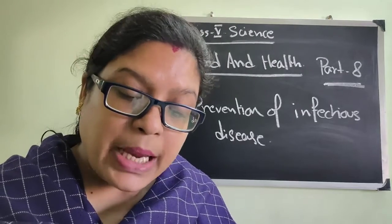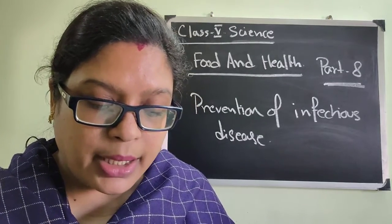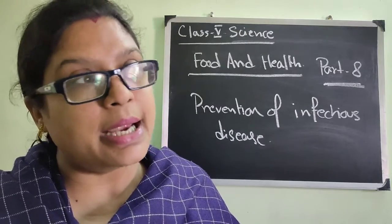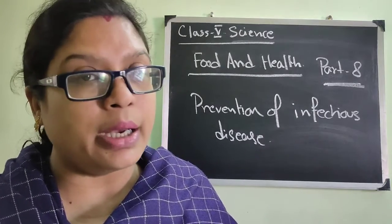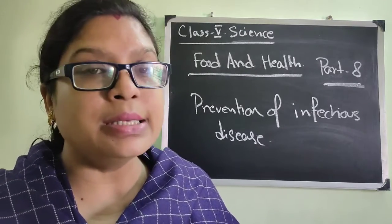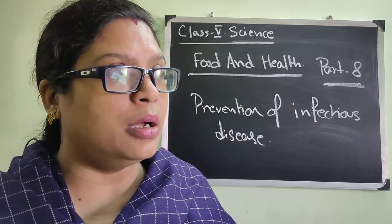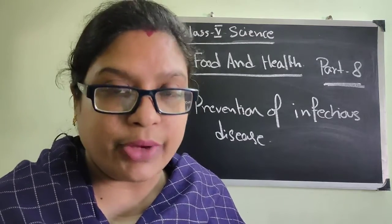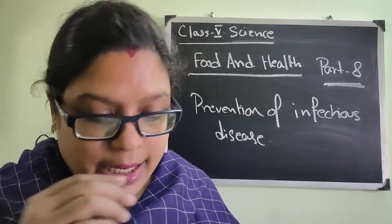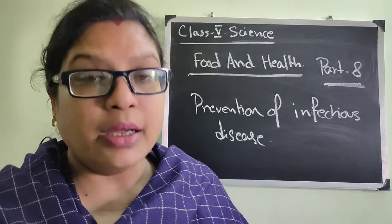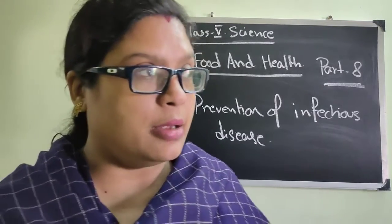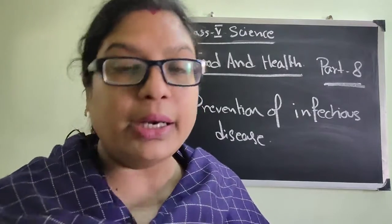Spray insecticides, which are chemicals that kill insects. Spraying insecticides is also important. In big crop fields, insecticides and pesticides are spread to kill the germs that can deteriorate the condition of the crops.